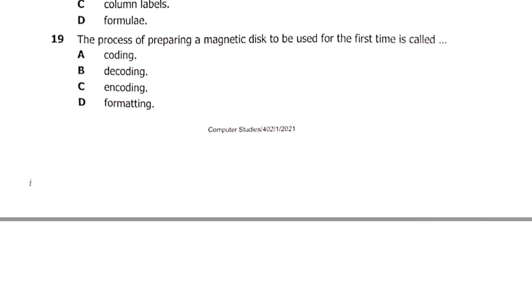Question 19: the process of preparing a magnetic disc to be used for the first time is — A: coding, B: decoding, C: encoding, or D: formatting. The correct answer is D — formatting is the process used to prepare a magnetic disc, especially for the first time.